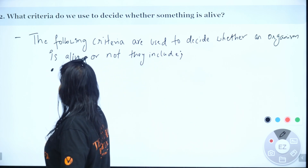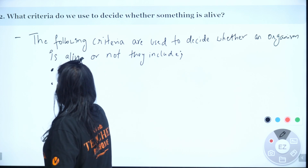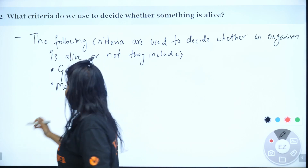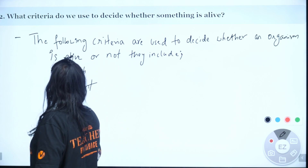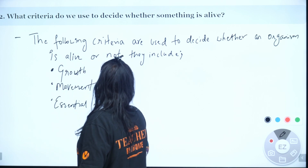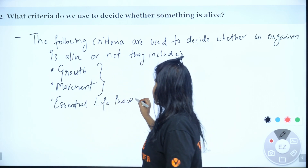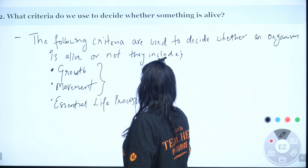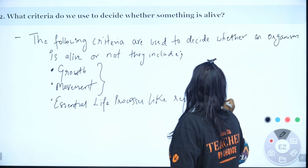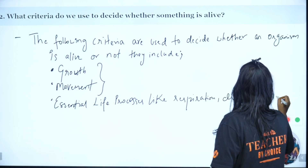First, it is growth. Next, it is movement. And last, essential life processes — for example, like respiration and digestion. Through these processes, we can decide whether the organism is alive or not.